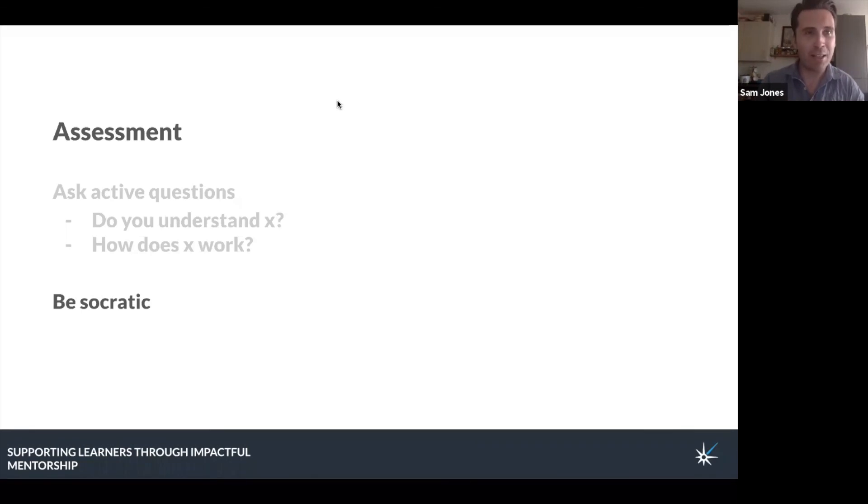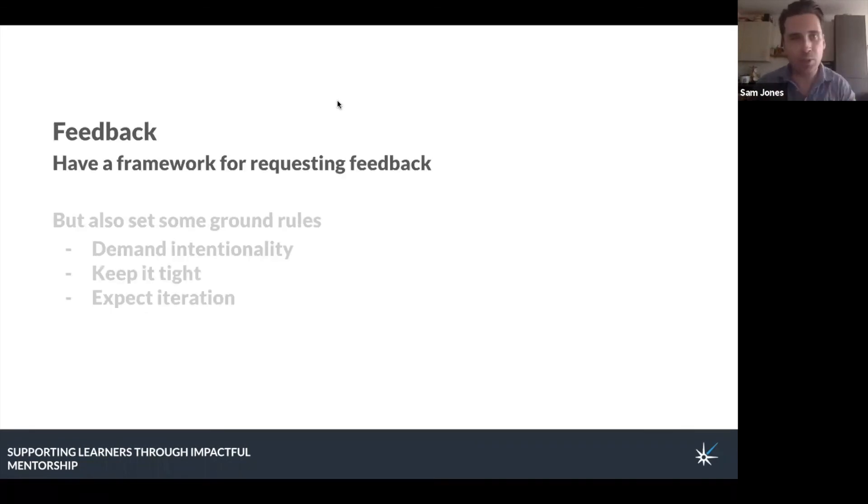The final area to discuss is feedback. If we go back to Hattie, who we discussed earlier, he found that providing timely, actionable feedback was among the most important actions that teachers could take in terms of improving learner progress. For some learners, though, asking for feedback can feel really difficult. For some people, knowing that the work that they've produced isn't perfect, and as a learner it's not going to be perfect, can feel like a real blocker for asking for any feedback at all. So have some sort of framework in place, which makes that an easy thing to do. That can be super lightweight. In fact, you're probably already doing it. If you're doing PR review, that's a framework for feedback. If you're doing stand-ups and retros, that's a framework for feedback. Just have something in place to make it easy.